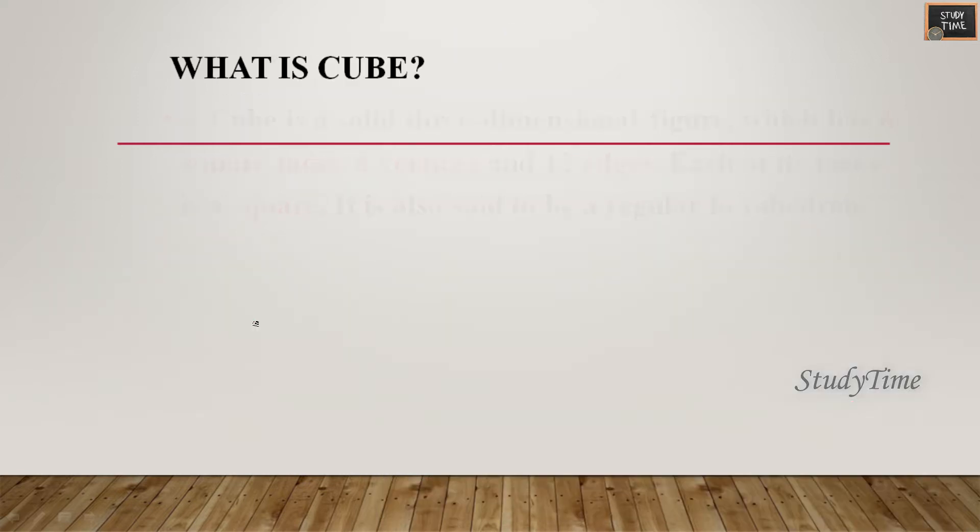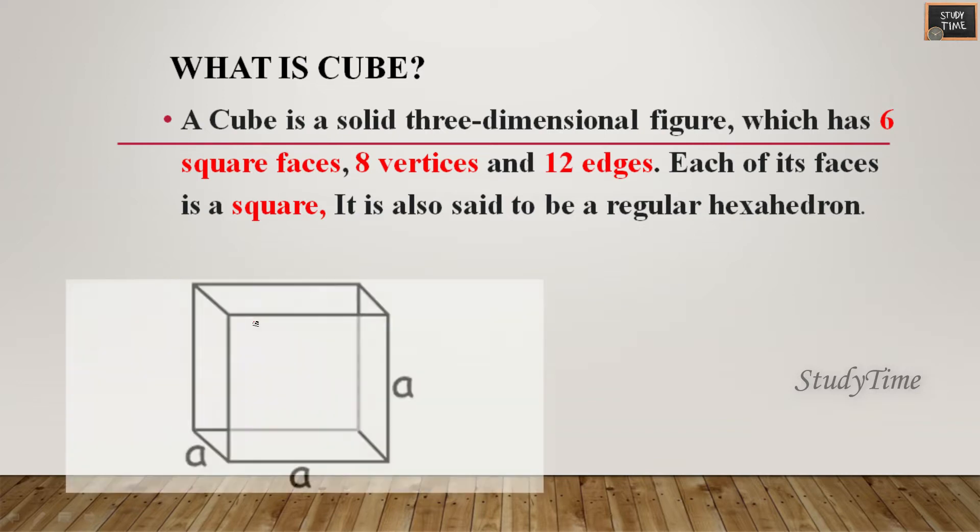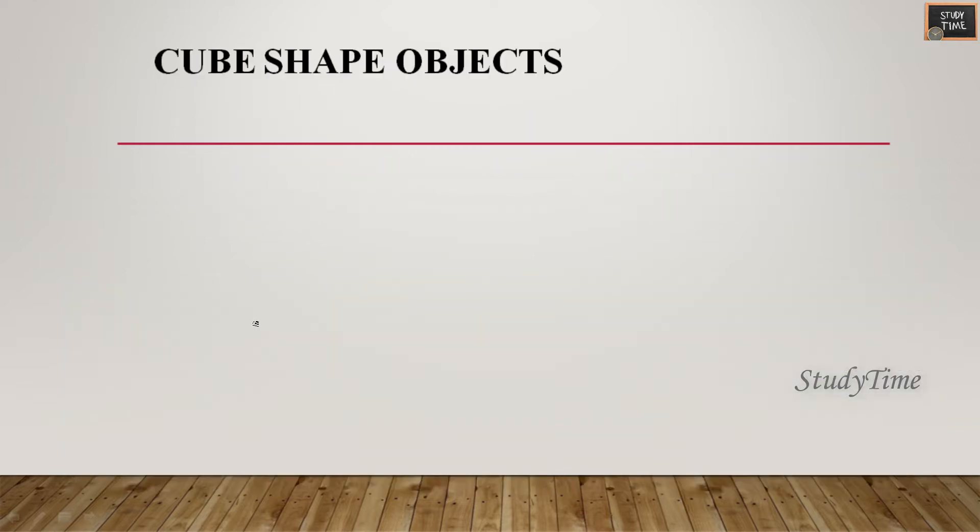What is a cube? A cube is a solid three-dimensional figure which has 6 square faces, 8 vertices and 12 edges. So this is a cube where you will be having all sides equal.